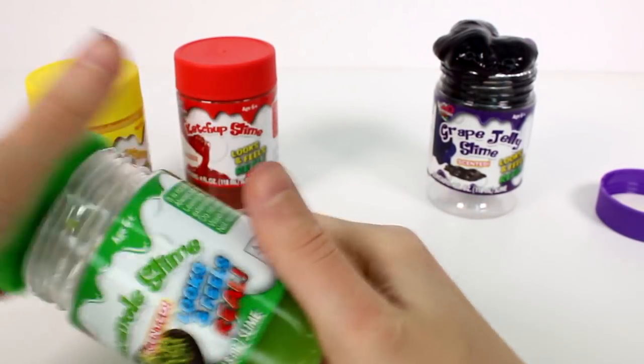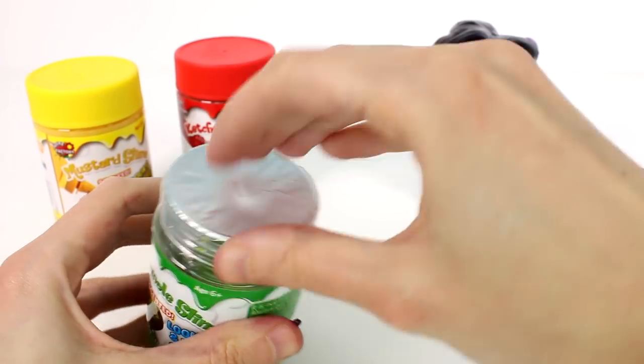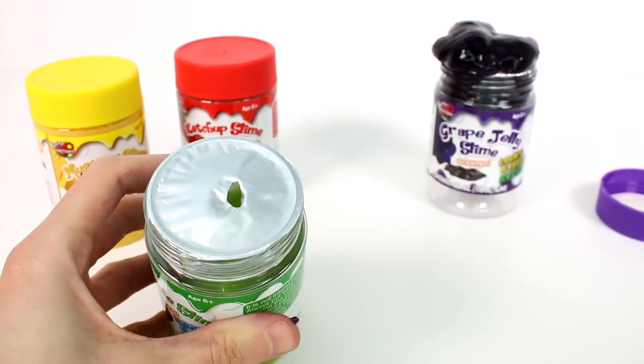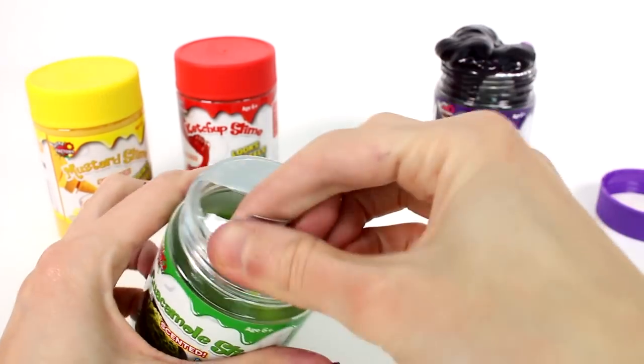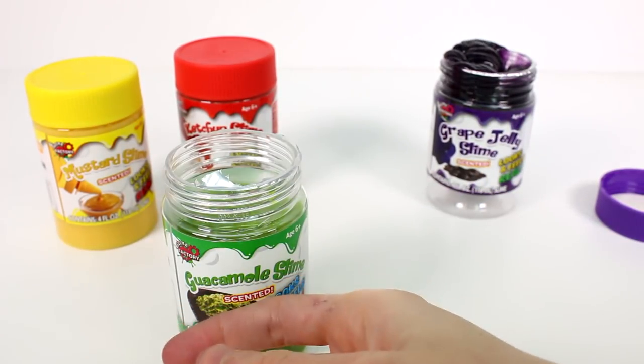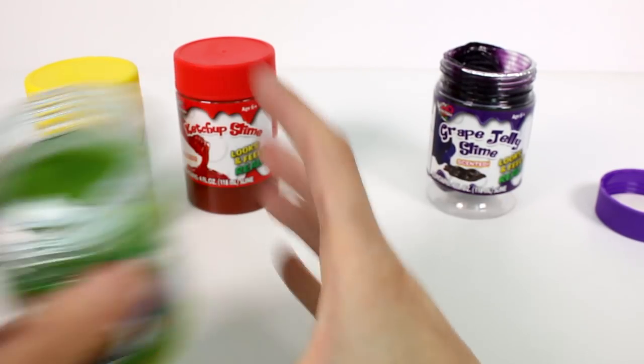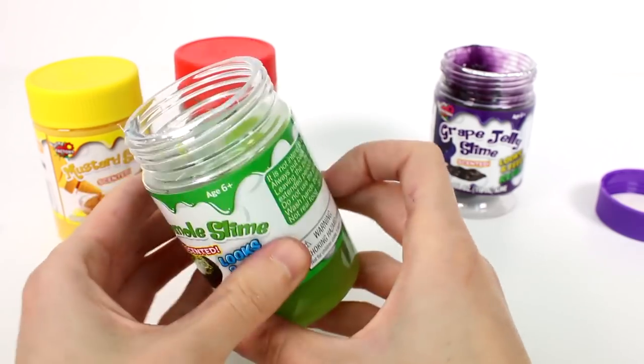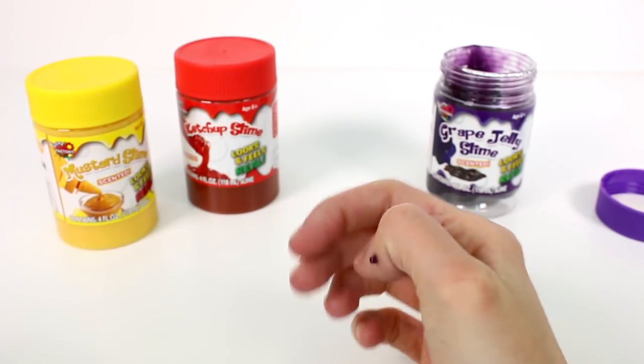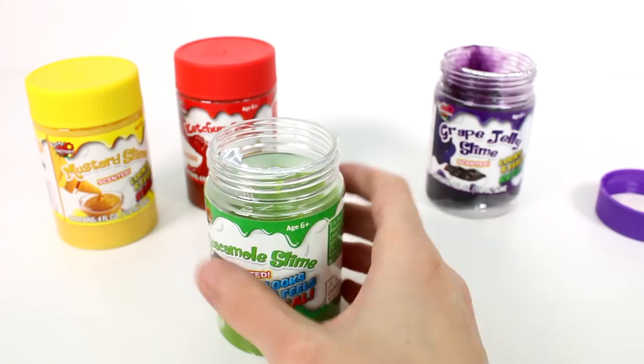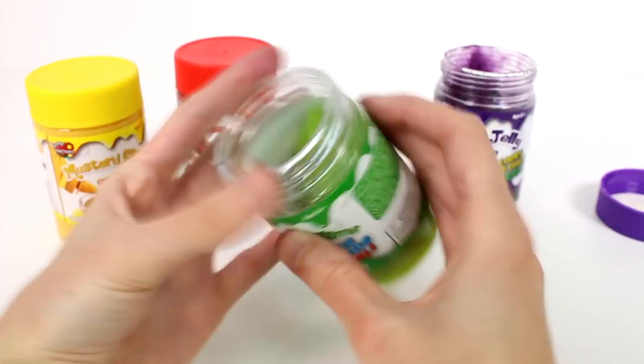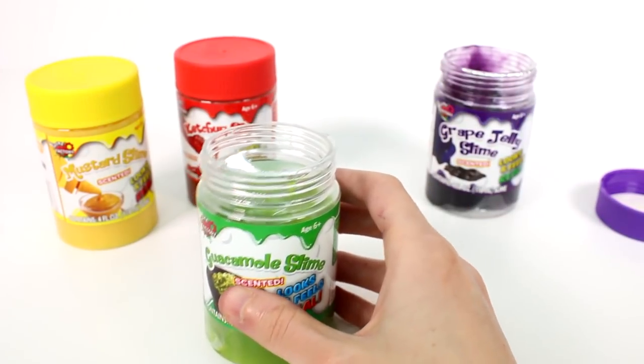Let's open up the guacamole. Okay, this one's new. I didn't have to open this one. I mean I didn't have to or I will have to open this one. All right, so we have the guacamole. I'm a little nervous. I don't know what this is going to smell like. Let's smell it first. Oh, it's like again that shampooy scent. I don't know how else to describe it. Looks like my hands are purple from the grape slime.